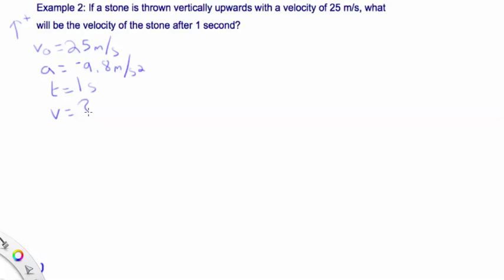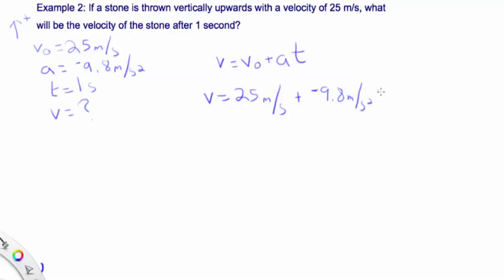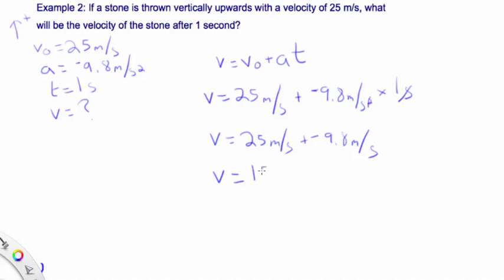Writing all those variables, we can see the only equation that uses all of them is v = v₀ + at. Plugging in: the initial velocity is 25 meters per second, acceleration is negative 9.8 meters per second squared, multiplied by 1 second. Multiplying by 1 second doesn't change the number but does change the units. So we end up with 25 m/s plus negative 9.8 m/s, which gives us 15.2 meters per second.